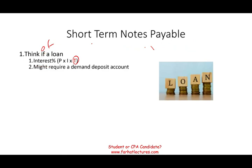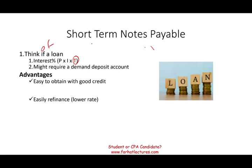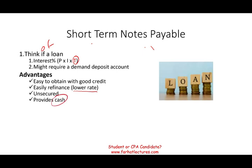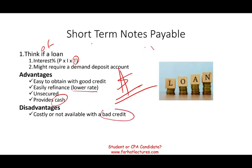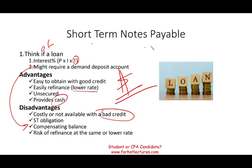The advantages of short-term notes payable include: if you have good credit you can get a loan easily, you can refinance, and rates are generally lower because there is less risk to the lender. They are usually unsecured and provide cash you can use for any purpose — unlike accounts payable which is tied to specific purchases. Disadvantages include: costly if you have bad credit (higher interest rate), it's a short-term obligation requiring fast repayment, a compensating balance may be required, and there is risk that refinancing at a favorable rate may not be available.